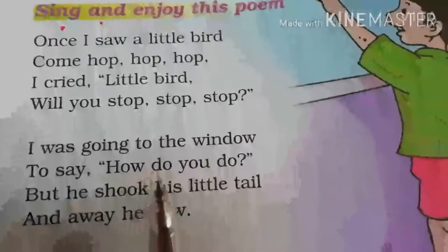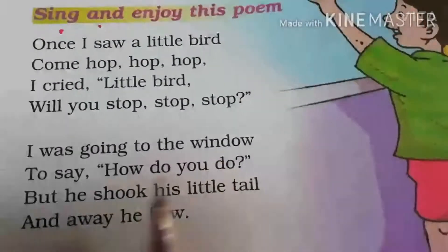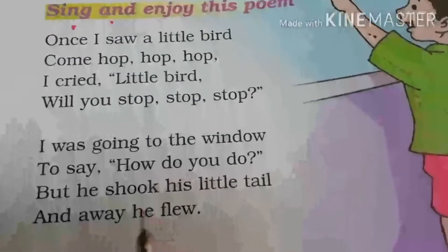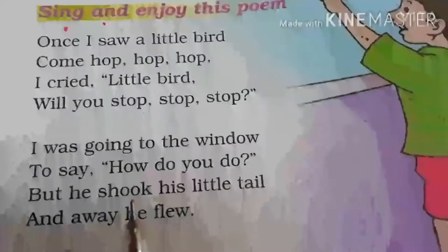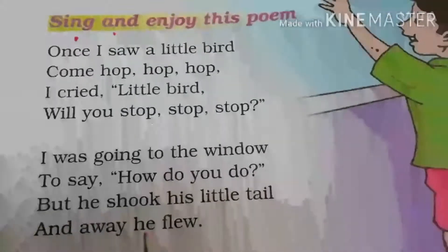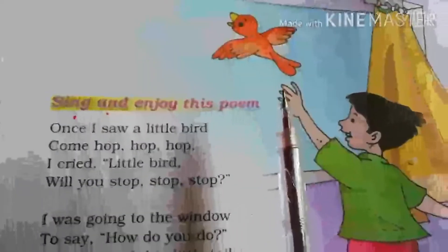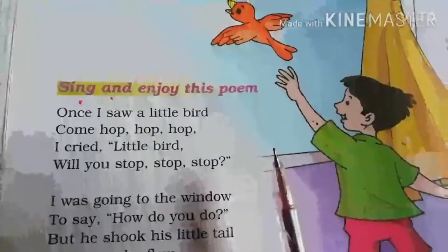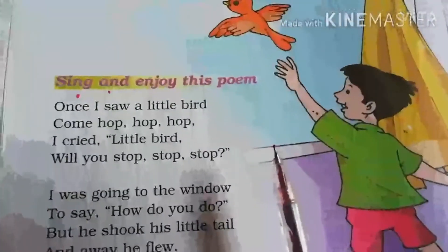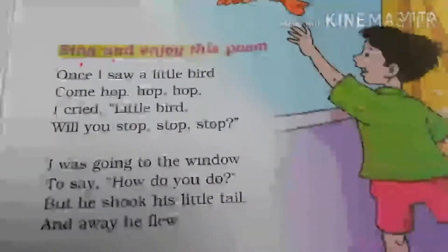Main to window ki taraf, khidki ki taraf ja raha tha, usko poochhne — how do you do, tum kaisi ho. But he shook his little tail — lekin woh choti si chidhia ne apni poonch hilai, choti si poonch hilai, aur woh door ud gayi. Is poem mein yeh chota baccha dekhta hai ki ek choti si chidhia phudakte phudakte uski window pe aake baithne wali thi. Woh sochta hai ki main jaake us choti si chidhia se poochhoon — how do you do, tum kaisi ho chidhia. Lekin woh chidhia usko dekhke shayad dar jaati hai, aur jaisi dekhti hai ki woh baccha uske paas aa raha hai, woh apni choti si poonch hilate hue door aasman mein ud jaati hai.